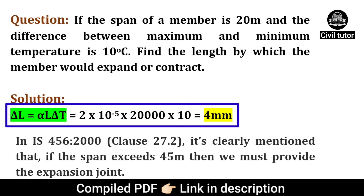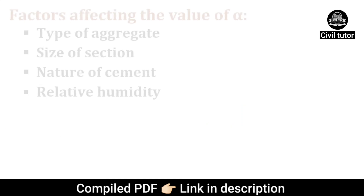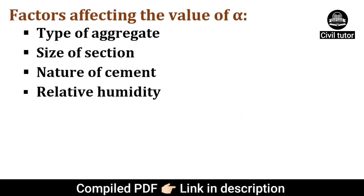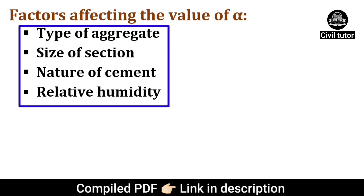In IS 456-2000, it is clearly mentioned that if the span exceeds 45 meters, then we must provide an expansion joint. The various factors which affect the coefficient of thermal expansion are: type of aggregate, size of section, nature of cement, and relative humidity.